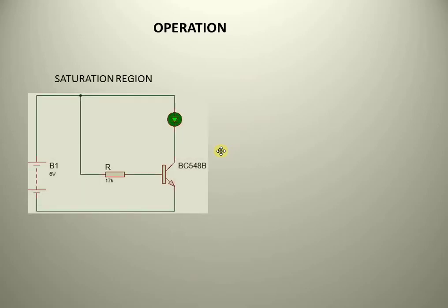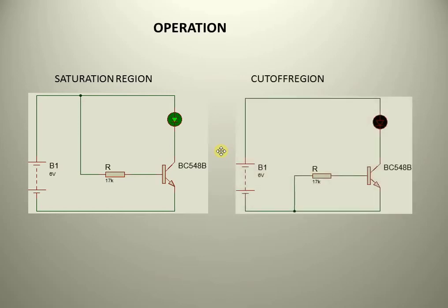In the saturation region, I am going to connect an LED load to the collector. If I connect the base to the positive terminal of the battery, then the LED will glow because the transistor is acting as a fully on switch. At the cutoff region, the LED will be off if I connect the base of the transistor to zero voltage. Now I will show the real demonstration of the circuit.